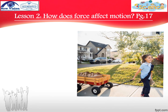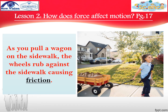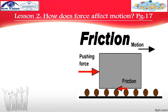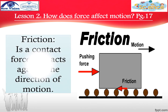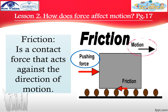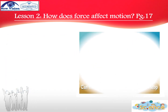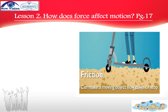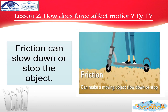Look at the picture. As you pull a wagon on the sidewalk, the wheels rub against the sidewalk, causing friction. Now look at the box. You can see there is a pushing force. The motion will be in the same direction as the pushing force, while friction will act against the direction of the motion. So, friction is a contact force that acts against the direction of motion. Look at the picture — you can see there is a rough surface, and the rough surface causes friction. Friction can slow down or stop the object.